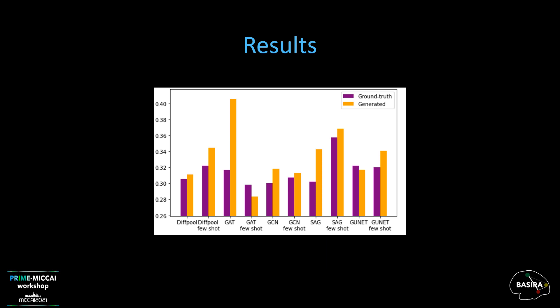Starting with the ground-truth dataset, this figure shows that the most reproducible model is the one trained with few-shot learning. For the generated dataset, GAT was identified as the most reproducible model.